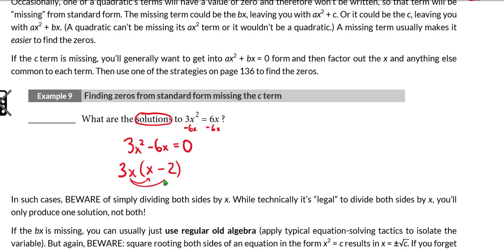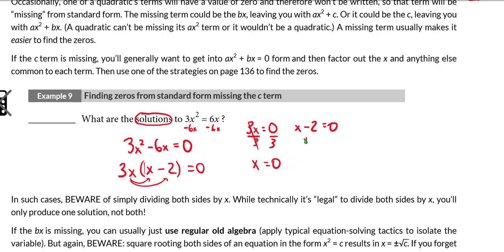A quick distribution tells me that I did. Now I'm going to use the zero product property. We said that if the coefficient in front of x is 1, we can just take the opposite of this number — so 2 is going to be one of the zeros. But I'm going to use the zero product property to keep this more formal and systematic. If 3x times x minus 2 equals 0, one of those two things has to equal 0. So I get 0 and I get positive 2. The two solutions are 0 and 2.